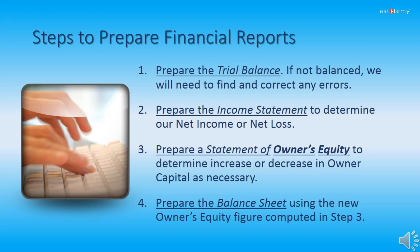In a manual bookkeeping system, there are four steps to prepare your financial reports. The first step is the most crucial: preparing the trial balance. If the trial balance does not balance, we must go back and find and correct any errors, because everything else you do from that point on hinges on your trial balance being correct.